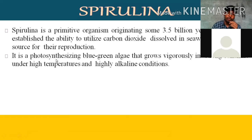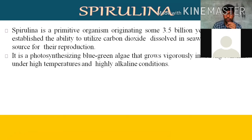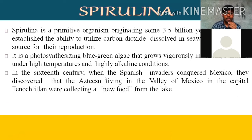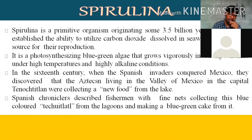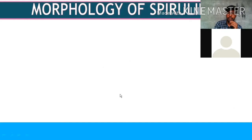Spirulina is a photosynthesizing blue-green algae that grows vigorously in strong sunshine, under high temperatures and highly alkaline conditions. If you are going to establish a spirulina industry, keep in mind it is a photosynthetic organism — we have to provide water, sunlight, and maintain temperature and high alkaline conditions. In the 16th century, when Spanish invaders conquered Mexico, they discovered people in the Valley of Mexico collecting a new food from the lake — that was spirulina.